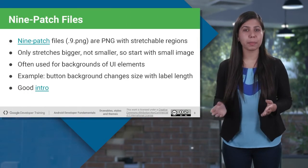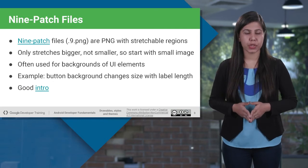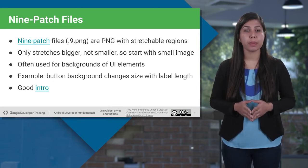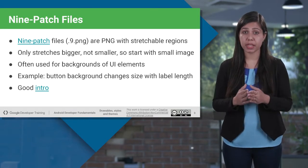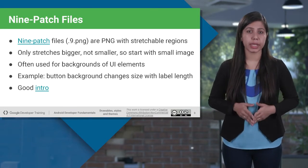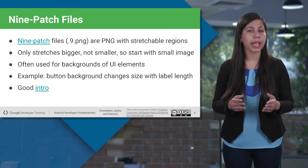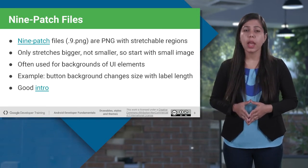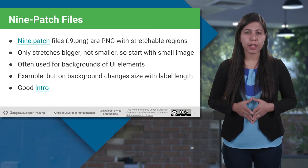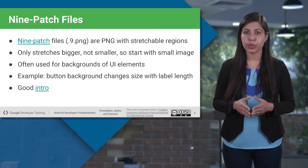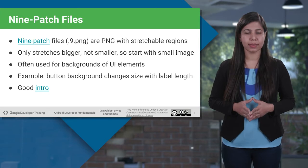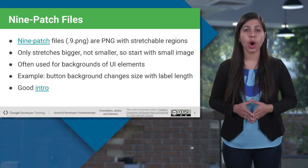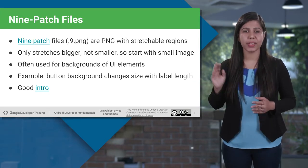Next, we have the 9-patch file. It is a PNG image that has stretchable regions. We often use them as UI backgrounds — for example, a button. This means the button can stretch horizontally and vertically within the portion defined using the 9-patch image format. It's good to remember that 9-patch files only grow and don't shrink, so start with a small PNG. For more information on 9-patch files, check out the provided link.